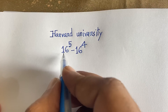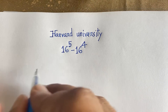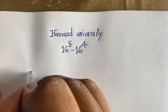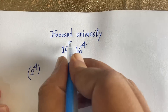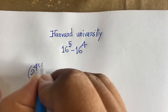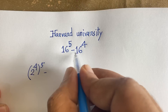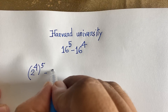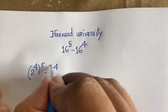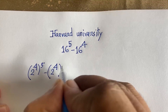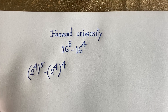First of all we will find out 16 power 5. We know that 16 is equal to 2 to the power 4, so 16 power 5 becomes 2 to the power 4, whole to the power 5. Similarly, 16 power 4 becomes 2 to the power 4, whole to the power 4.